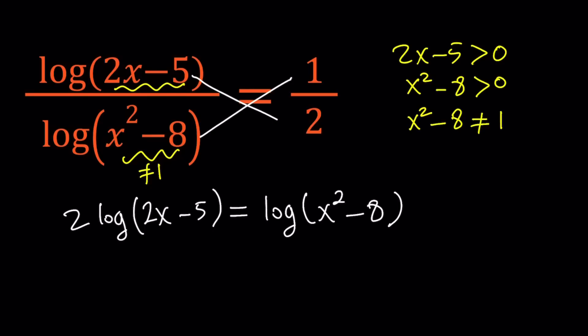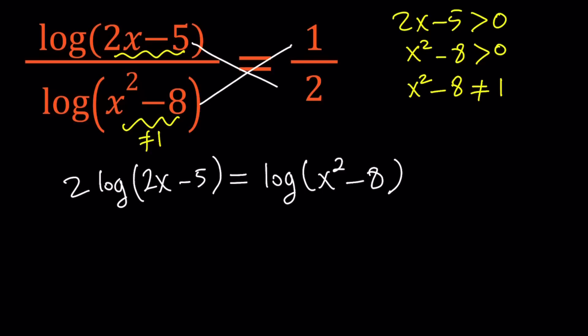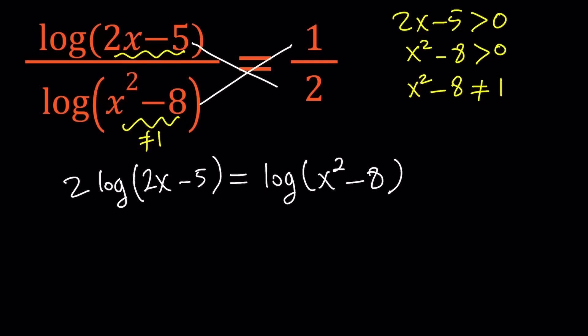Let's go ahead and solve this equation under those conditions. And remember, we have what is called a power property with logs. It says if you have log a to the n, write it as n times log a. But we have the opposite scenario. We have a coefficient, so we can make it an exponent. That's what we're going to do here. So we're going to move the 2 back and put it up here as an exponent. So this becomes log 2x minus 5 to the second power equals log x squared minus 8.